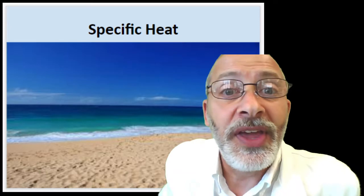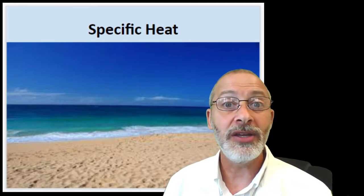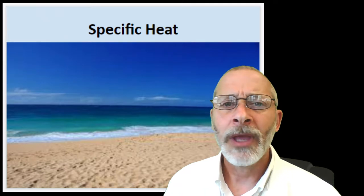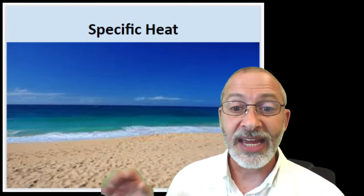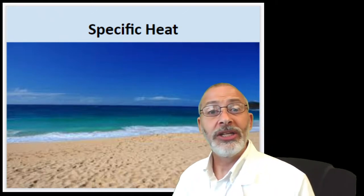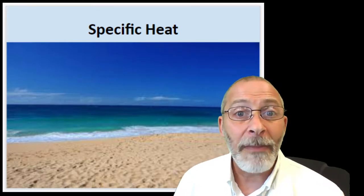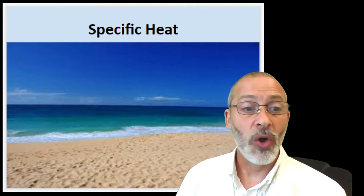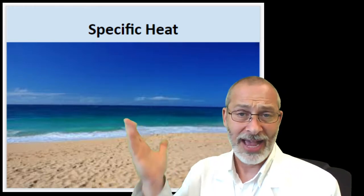To give you an analogy, think about our last unit on motion and momentum. A motorcycle can speed up and slow down really fast, but a tractor trailer takes a lot longer to speed up and a lot longer to slow down. In this example, the sand would be like the motorcycle and the ocean water would be like the tractor trailer. What we're actually describing here is our next term: specific heat, which is going to tie into our lab activity tomorrow.